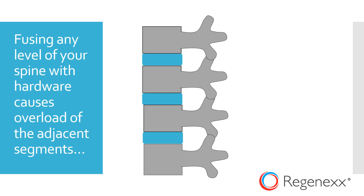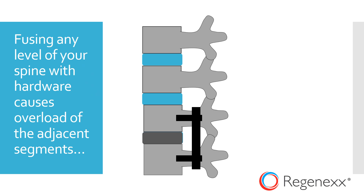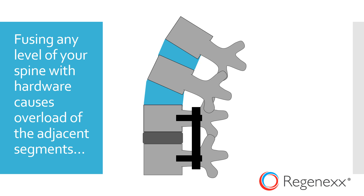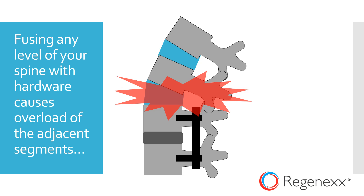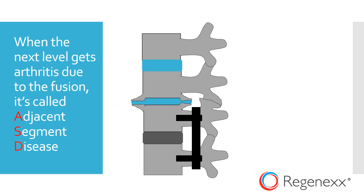When we take fusion hardware and put it in there and fuse the disc solid, that's a problem because it means that part of the spine can no longer move. The part that still moves ends up overloading the joint or the segment just above the fused part — and that's a big problem. That's called adjacent segment disease.